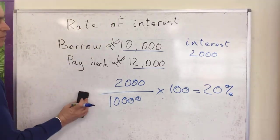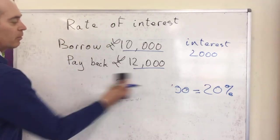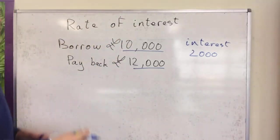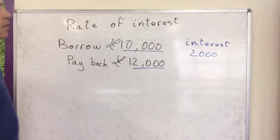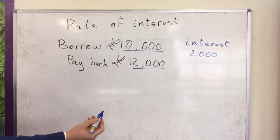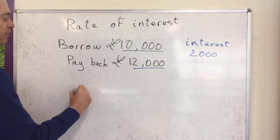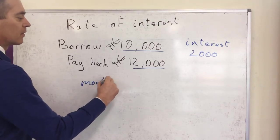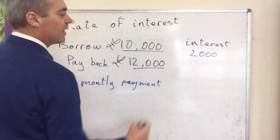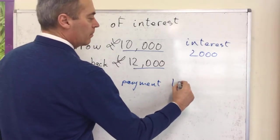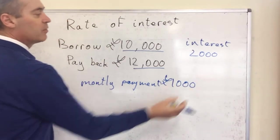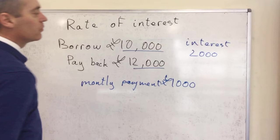Another thing to bear in mind is that in the case of a business, if you are borrowing money, you're not going to pay it back in one big lump sum — the payments will be spread over a duration. So if you are paying back over a whole year, that's 12 months, you would have monthly payments of £1,000. So 12 monthly payments of £1,000 totaling £12,000.